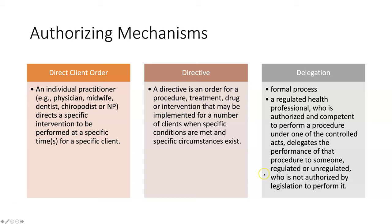An order is when an individual practitioner directs a specific intervention to be performed at a specific time for a specific client — either a verbal or written order. A directive is an order for a procedure, treatment, drug, or intervention that may be implemented for a number of clients when specific conditions are met. For example, on a cardiology unit, there may be a potassium directive to give potassium if levels fall below a certain level, or on a urology unit, a directive for when to insert a Foley catheter.